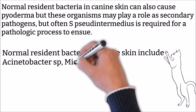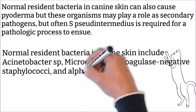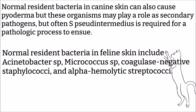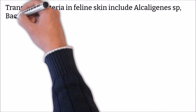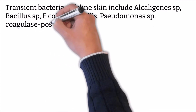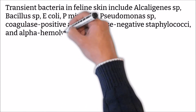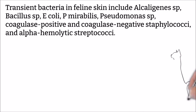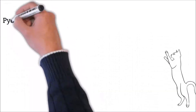Normal resident bacteria on feline skin include Acinetobacter species, Micrococcus species, coagulase-negative Staphylococci, and alpha-hemolytic streptococci. Transient bacteria on feline skin include Alcaligenes species, Bacillus species, E. coli, P. mirabilis, Pseudomonas species, coagulase-positive and coagulase-negative Staphylococci, and alpha-hemolytic streptococci.